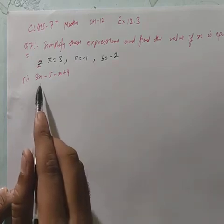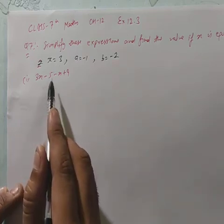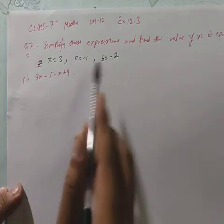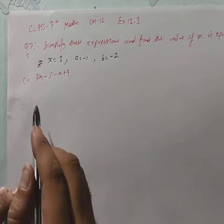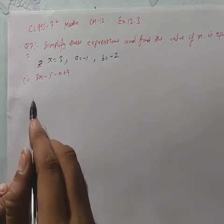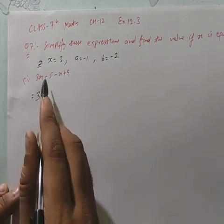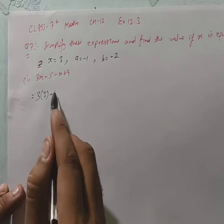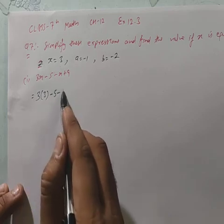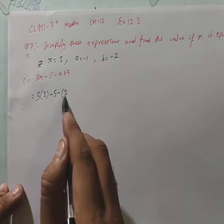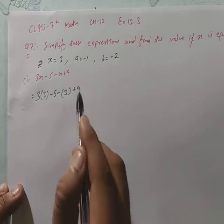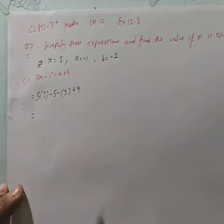First part: 3x minus 5 minus x plus 9. इसमें सिर्फ x की value रखो। तो यह हो जाएगा: 3 bracket 3 minus 5 minus bracket 3, plus 9.